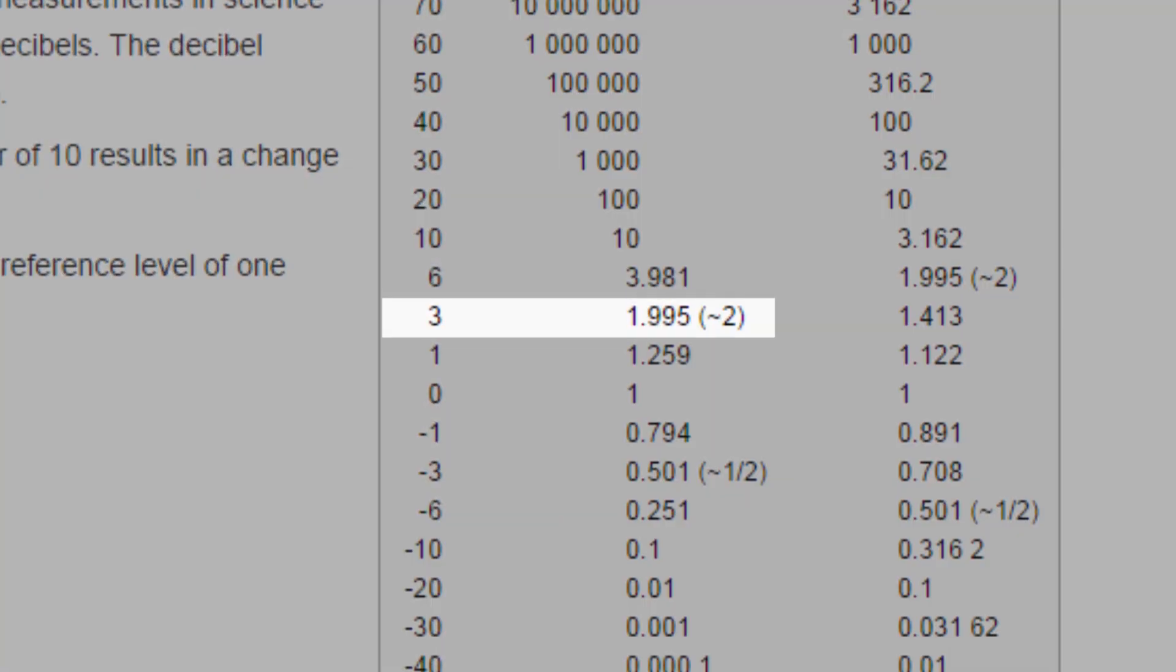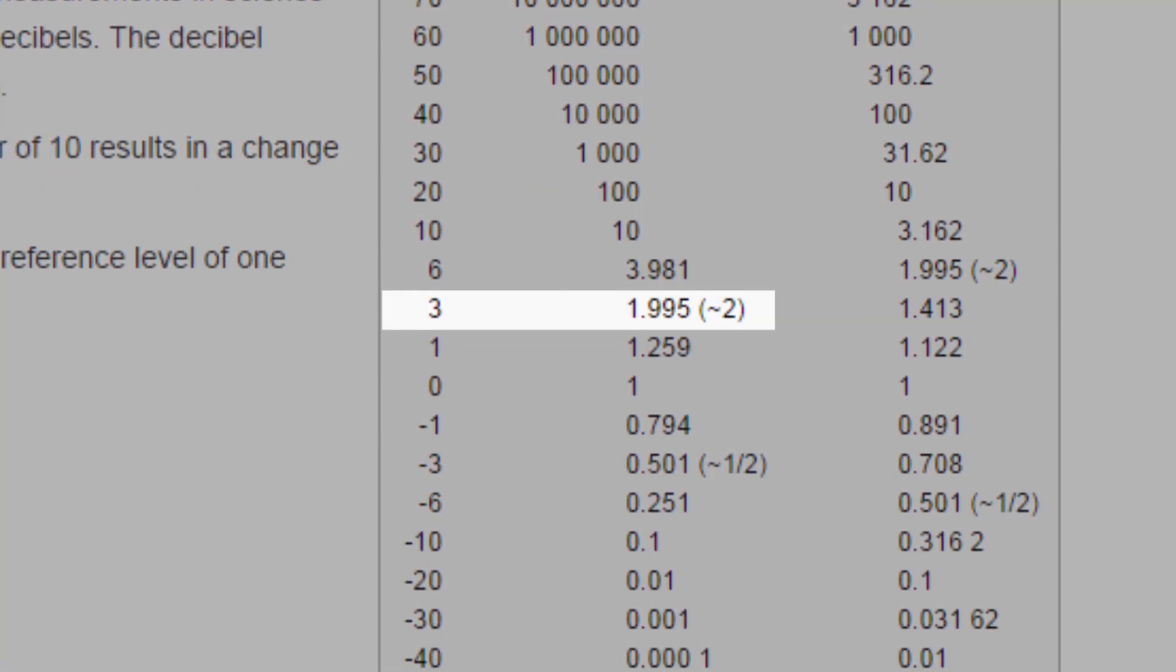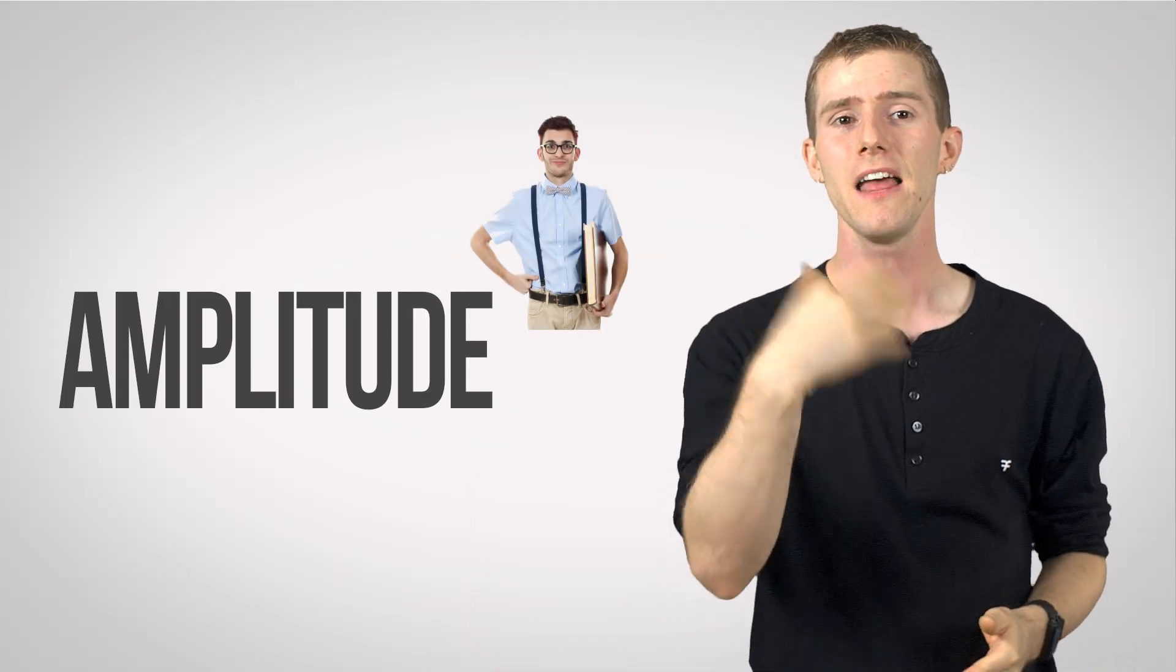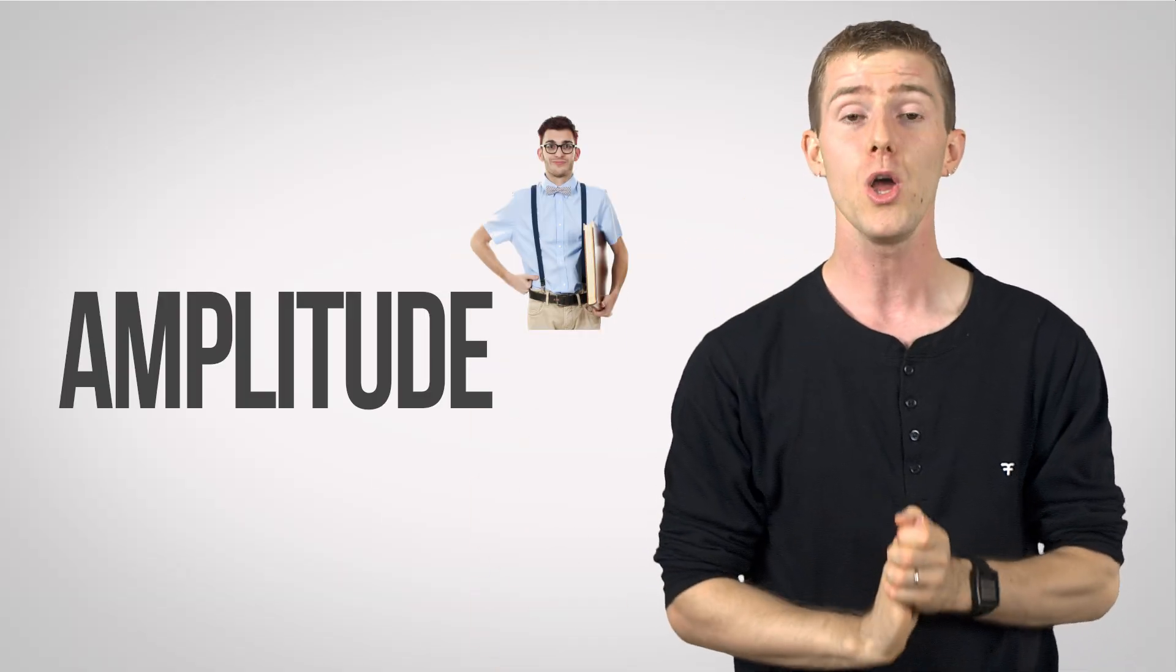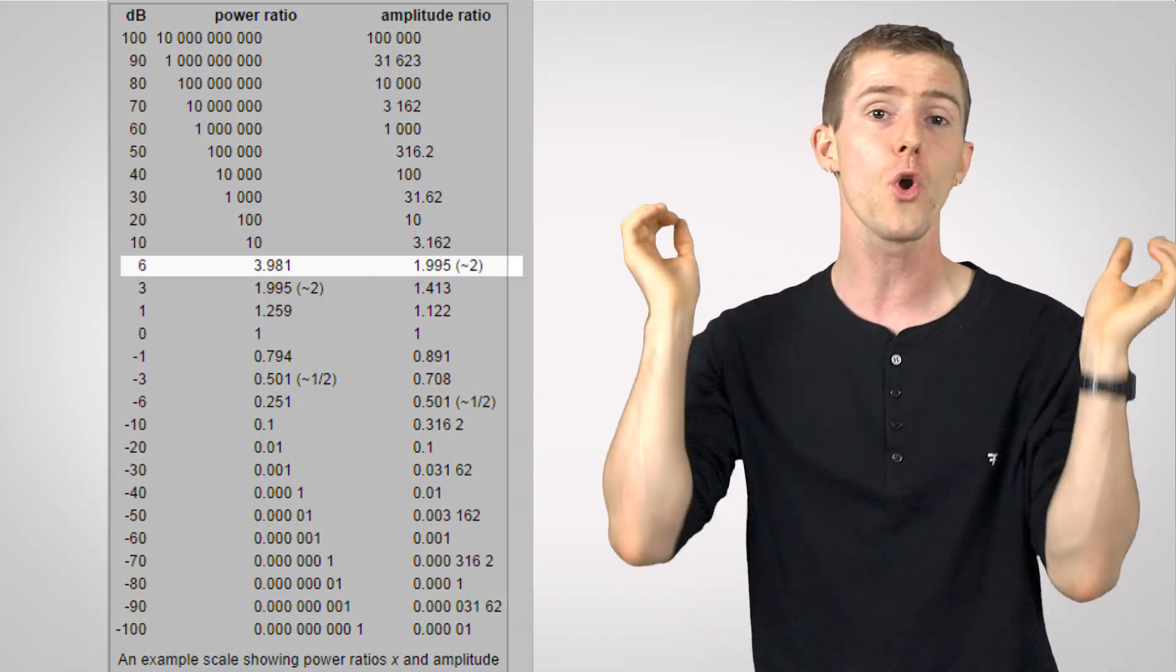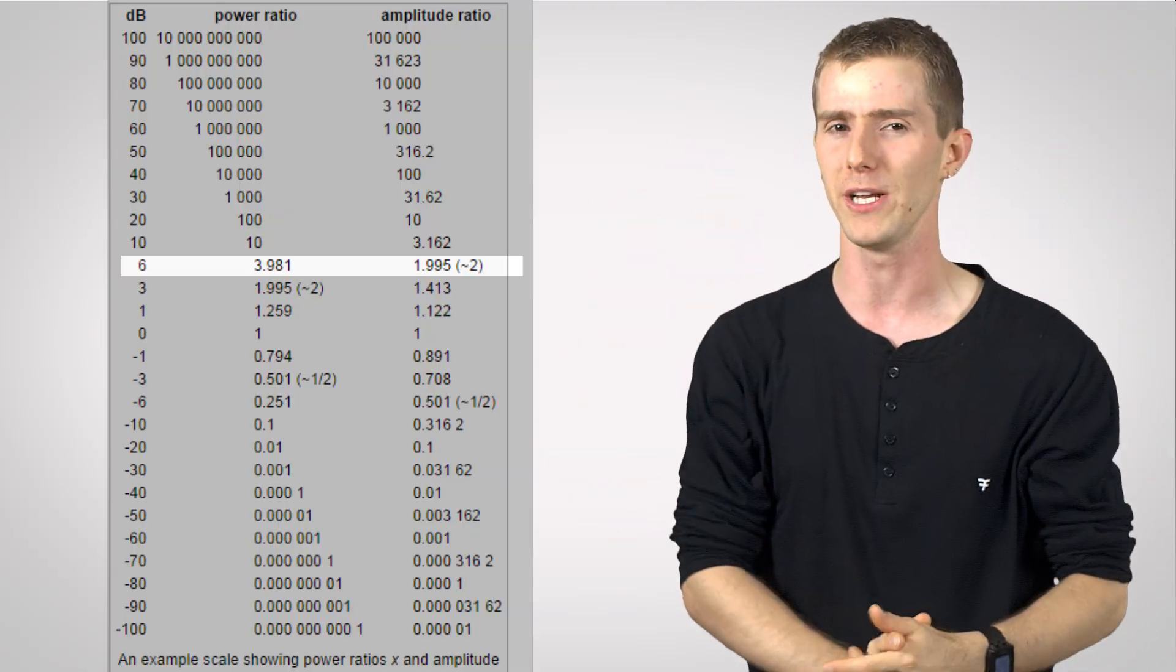Three decibels equates, approximately, to a doubling of the power ratio, but when we want an amplitude ratio, let's say to express relative voltage, or a field quantity like sound pressure level, we need to square the amplitude, which means that a difference of six decibels will equate to double the voltage or double the sound pressure level if you measure it.